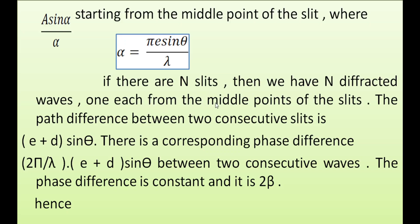We have N diffracted waves, one each from the middle point of each slit. The path difference between two consecutive slits is (e + d) sin theta. Due to the double slit analysis, there is a path difference and a phase difference. The phase difference is 2 pi over lambda times (e + d) sin theta, which we call 2 beta.